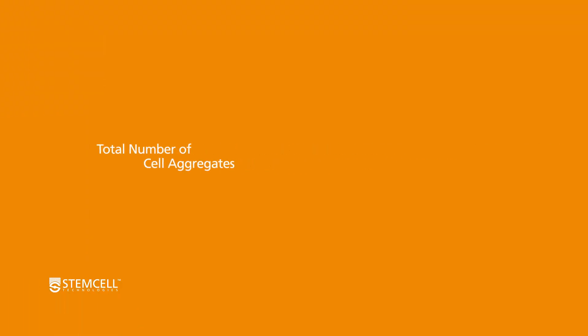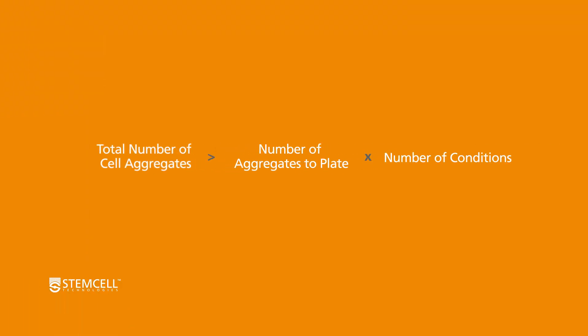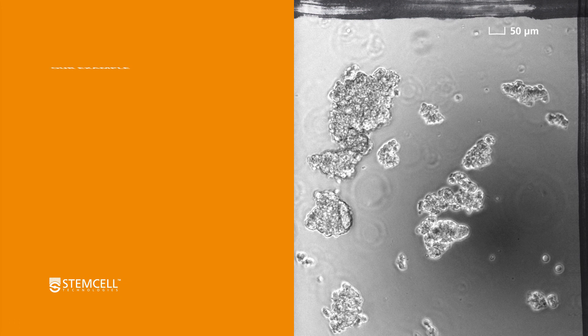Now, determine the target number of aggregates to plate. Ensure that the total target number of cell aggregates to plate for all conditions in your experiment does not exceed the total number of cell aggregates. For our example, we assume we want to plate 80 aggregates per well with 12 conditions. This requires 960 aggregates, which is less than 16,000, so we have enough aggregates.